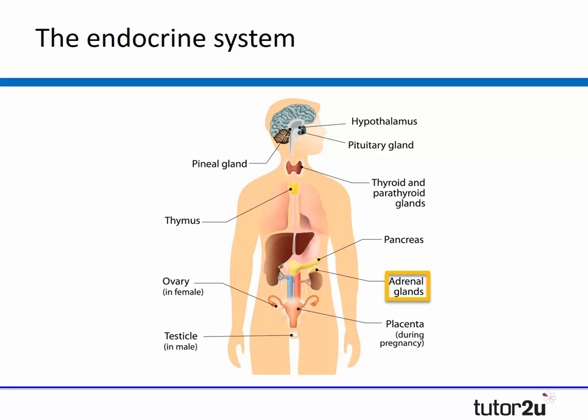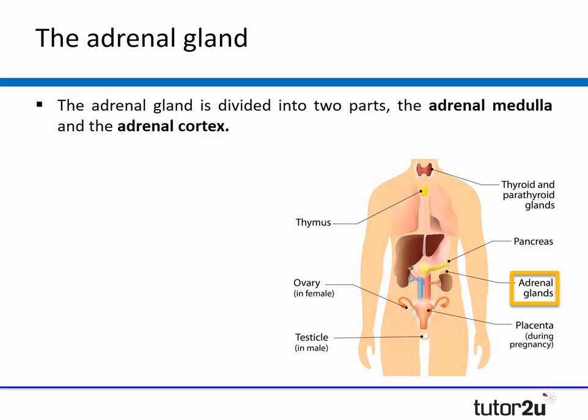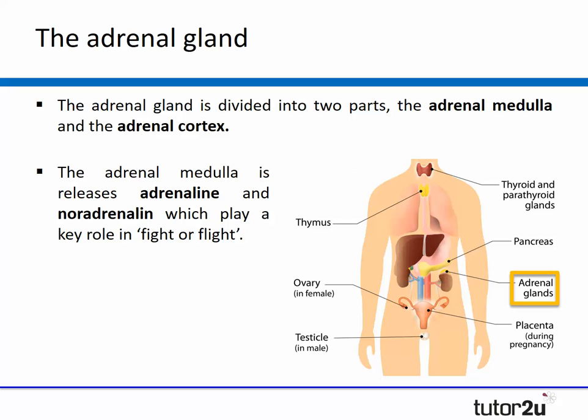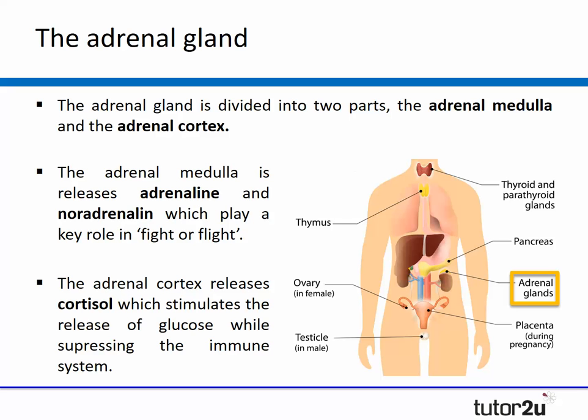Now let's look at the adrenal glands, which are located just above the kidneys. These are linked to the next part of the course — the fight or flight response. The adrenal gland is divided into two parts: the adrenal medulla on the inside, and the adrenal cortex which is the outer layer. The adrenal medulla releases adrenaline and noradrenaline, which prepare the body for fight or flight by increasing heart rate and dilating pupils. The adrenal cortex releases cortisol, which stimulates the release of glucose to provide the body with energy while also suppressing the immune system.